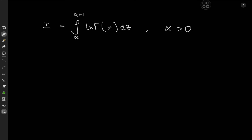This is clearly an integral function I of a parameter alpha. And because we have this structure in place, let's invoke Feynman's trick of differentiating under the integral sign — which in this case means we'll differentiate with respect to alpha.